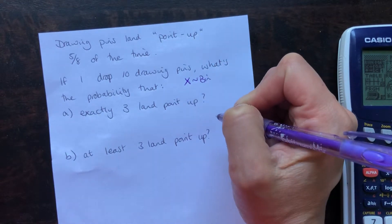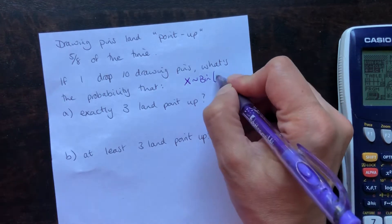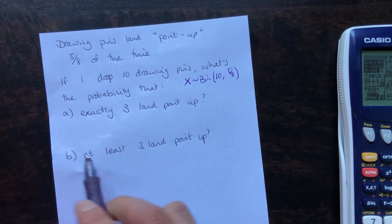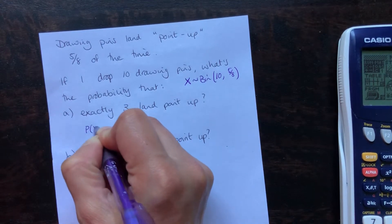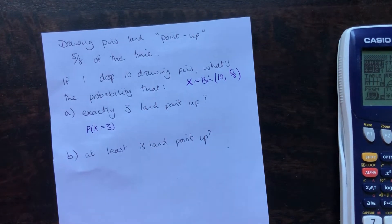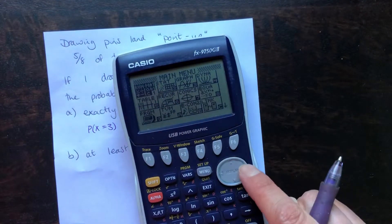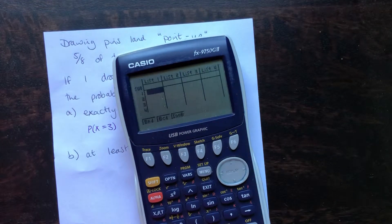X is our random variable. It follows binomial distribution. We've got ten trials, and the probability of success is five-eighths. We want the probability that X is exactly equal to three. Pop on over to your graphics calculator. We need the stats menu, so we're going to that second one.